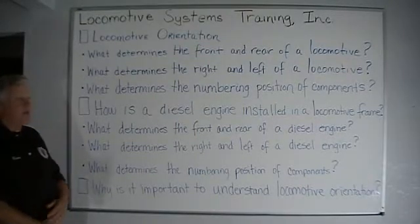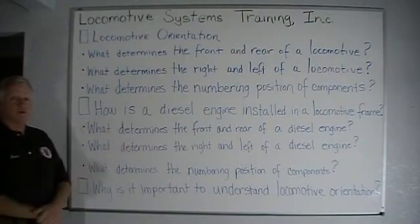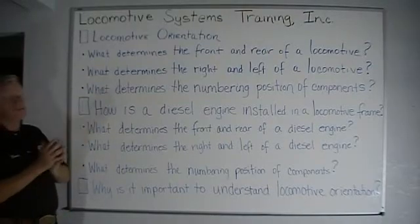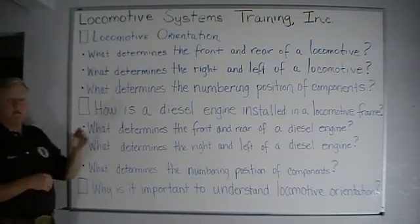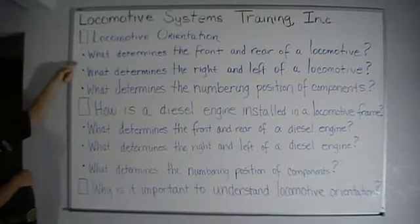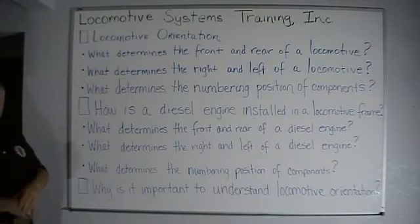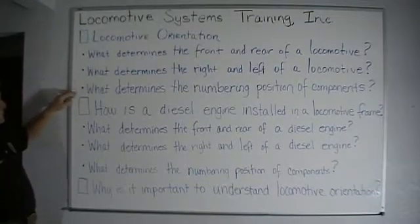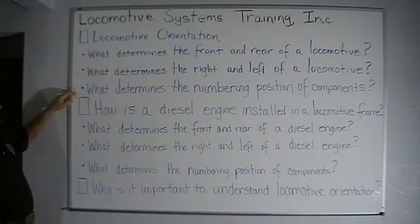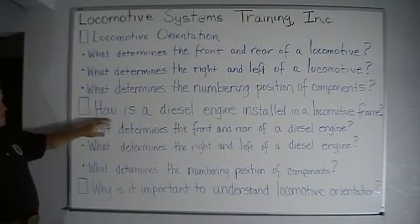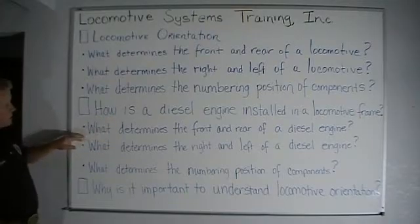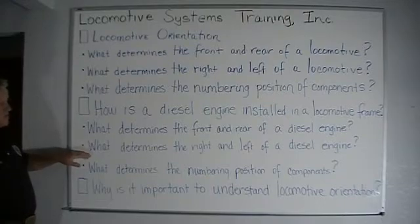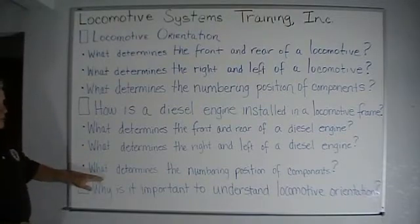Hi, my name is Bruce McConnell, and today we are going to do the first of a series of videos on Locomotive System Training Incorporated. Today's lesson is going to be on locomotive orientation, and this is the agenda we're going to follow. We're going to determine what determines the front end and rear end of a locomotive, the right and left side, the numbering position of components, how a diesel engine is installed in a locomotive frame, and what determines the front, rear, right, left, and numbering of components on the diesel engine.